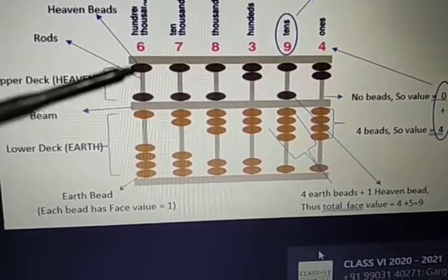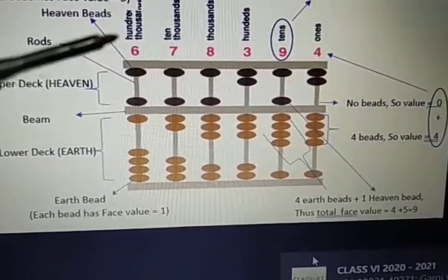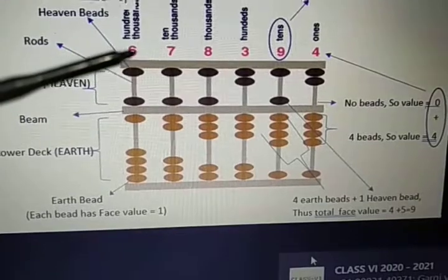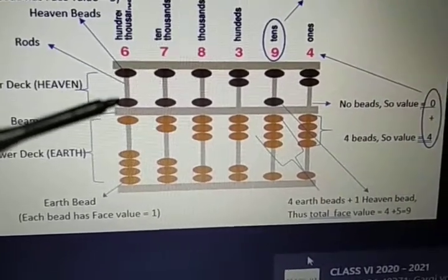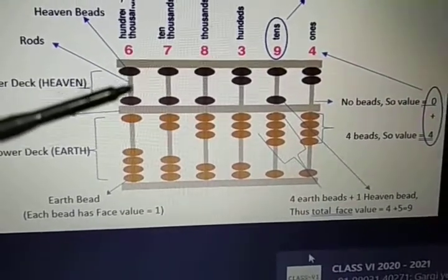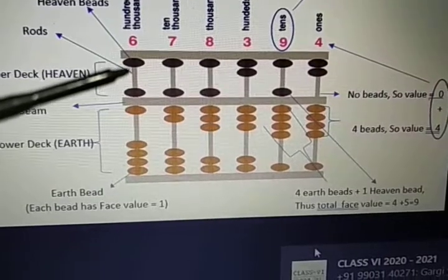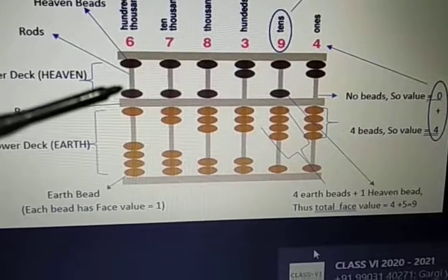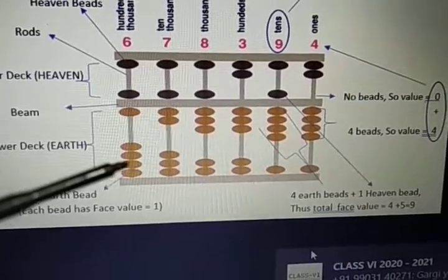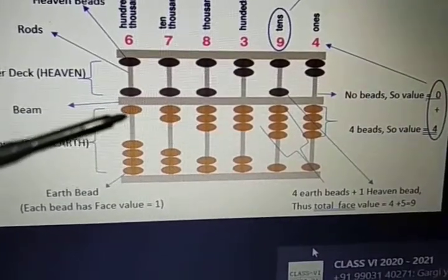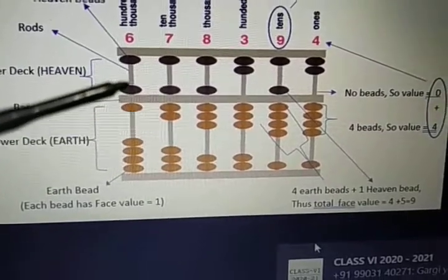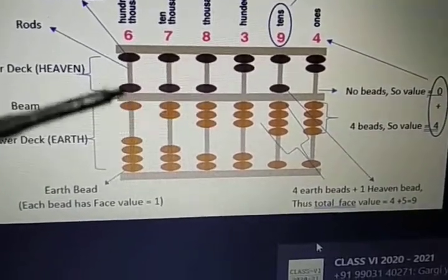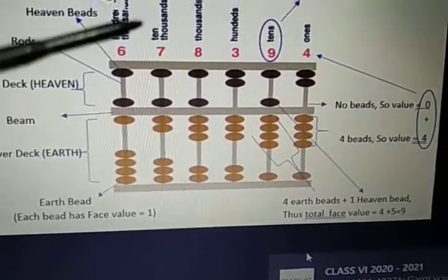Now there is a rule for putting the values. This six can be represented by the beads as when a bead of heaven is brought down it has value five, and when a bead of earth moves towards the beam it has value one. So the combined value becomes five plus one, that is six.